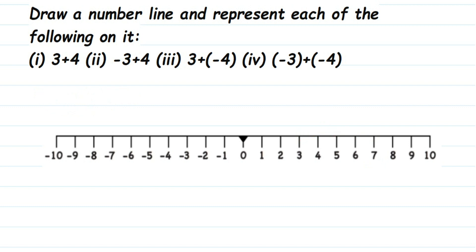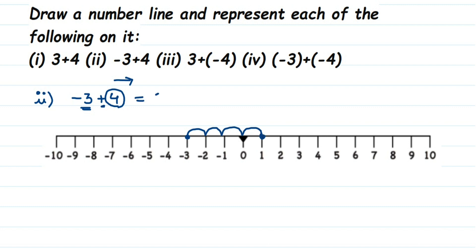The second question has one negative and one positive number: -3 + 4. We start at minus three on the negative side of the number line. We're adding positive four, which means go to the right side four units — one, two, three, four — stopping at one. So minus three plus four equals one.